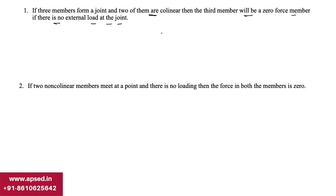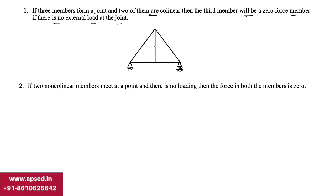We can draw a simple truss to understand this. Consider a basic triangular truss with one vertical member. Members AD, DB, and DC form a joint at D, where AD and DB are collinear — meaning they lie in a single straight line. Since there is no load at D, the third member DC is a zero force member, so the force in member CD will be zero.